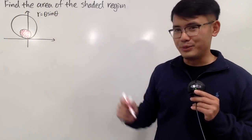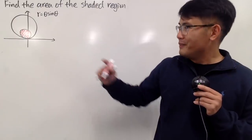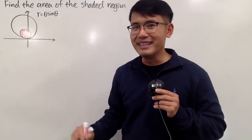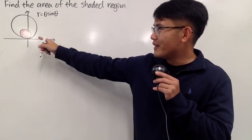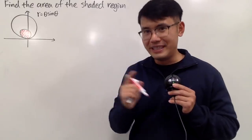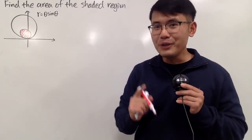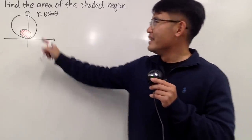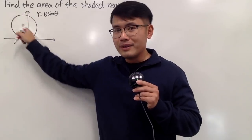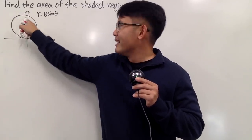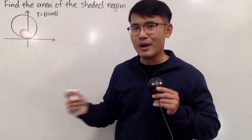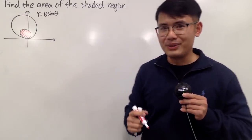This is really cool because you first see that we have two loops, and we're trying to find the area of the inside one. Later on, try to figure out the area of this part — inside the big loop but outside the small one. I will leave that to you guys.